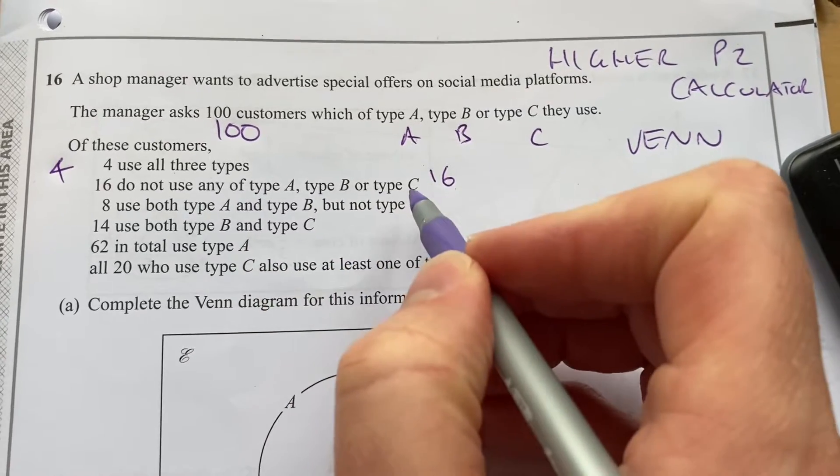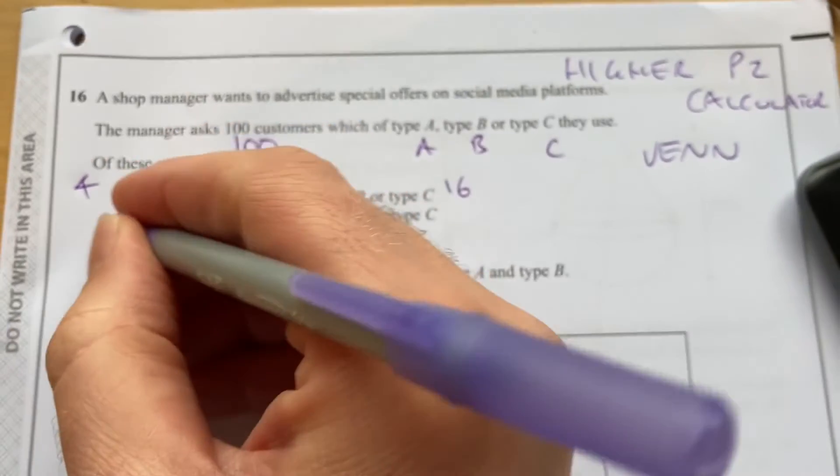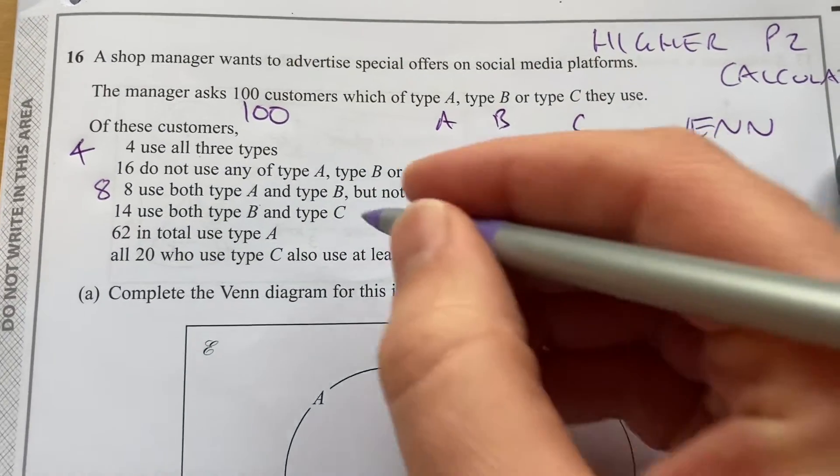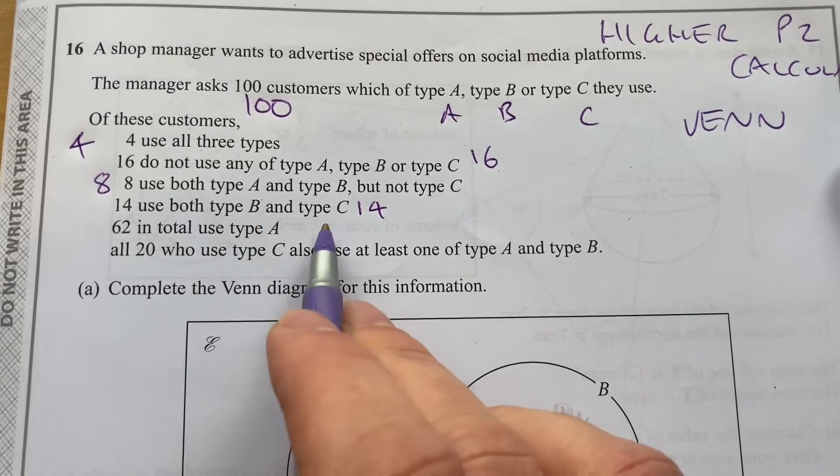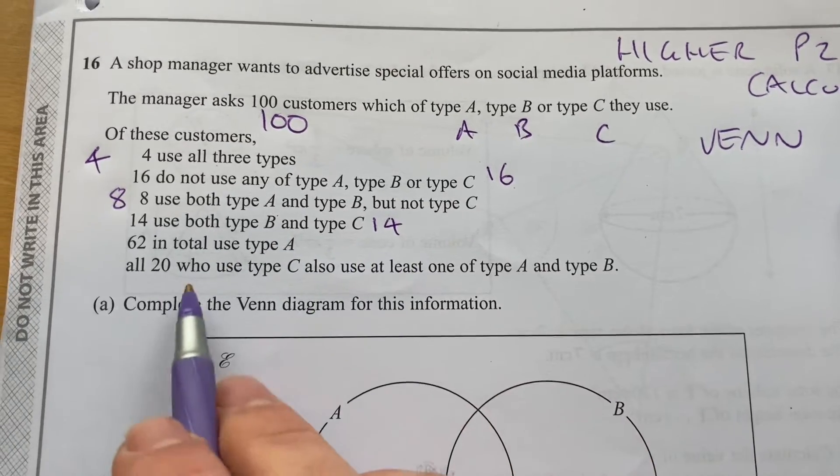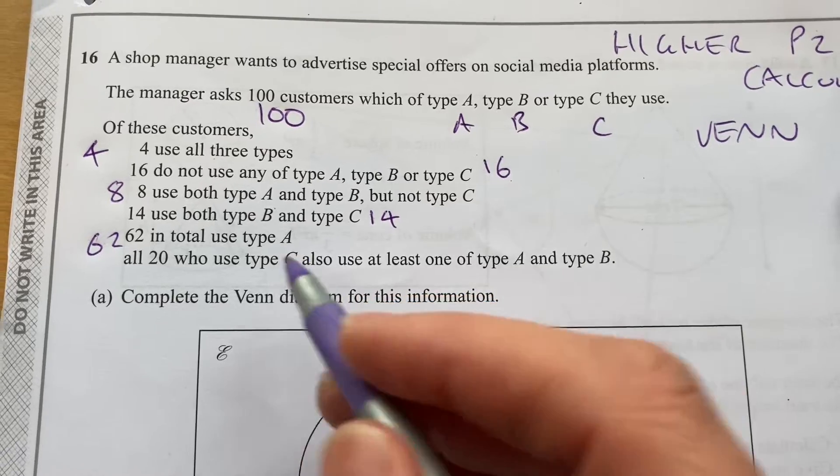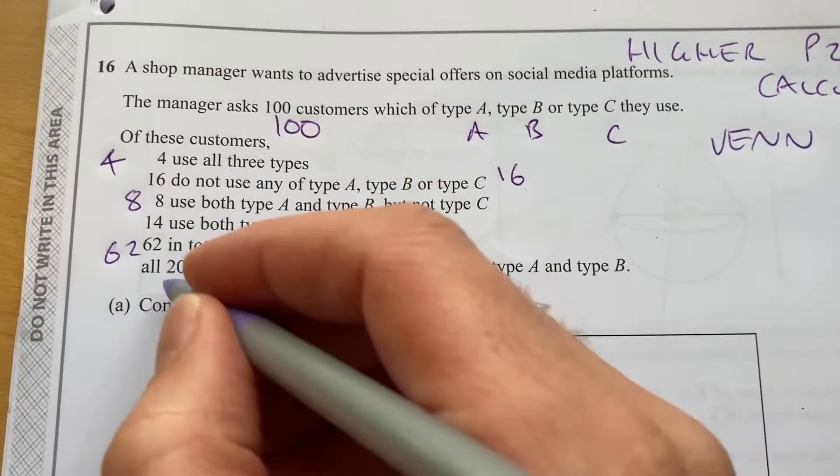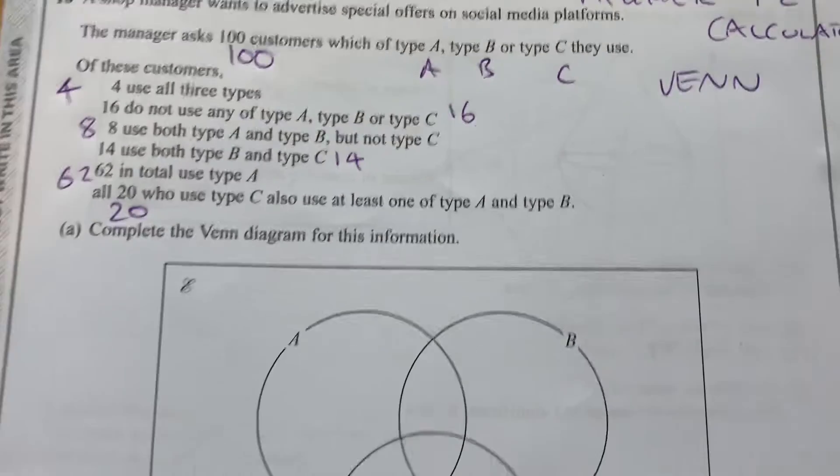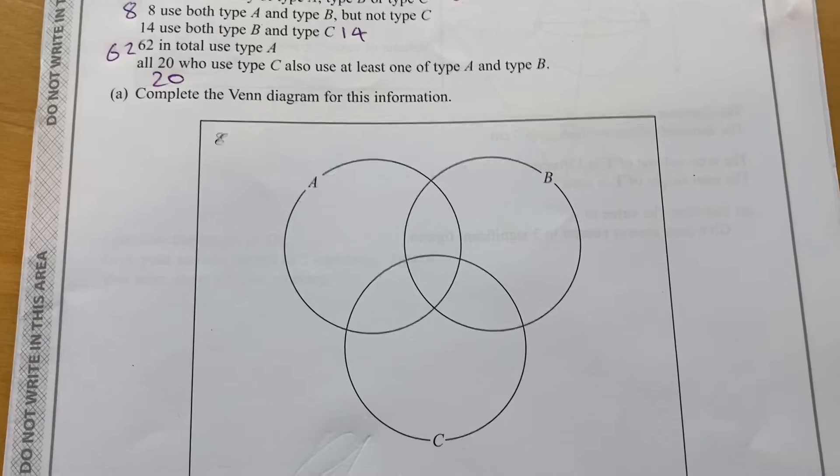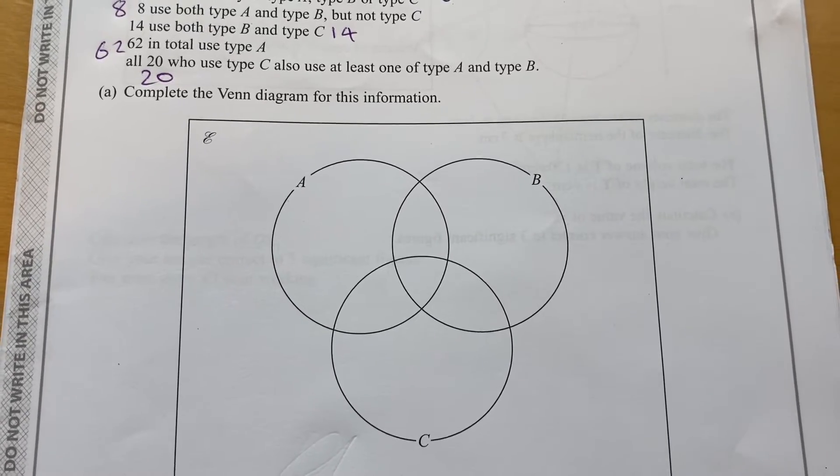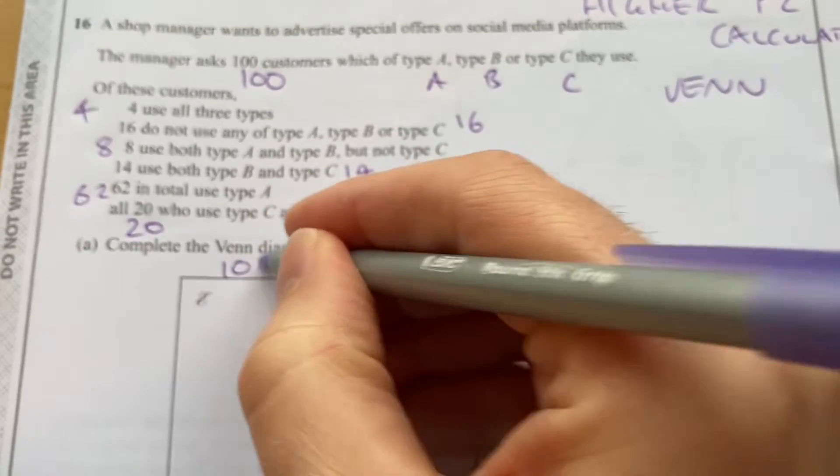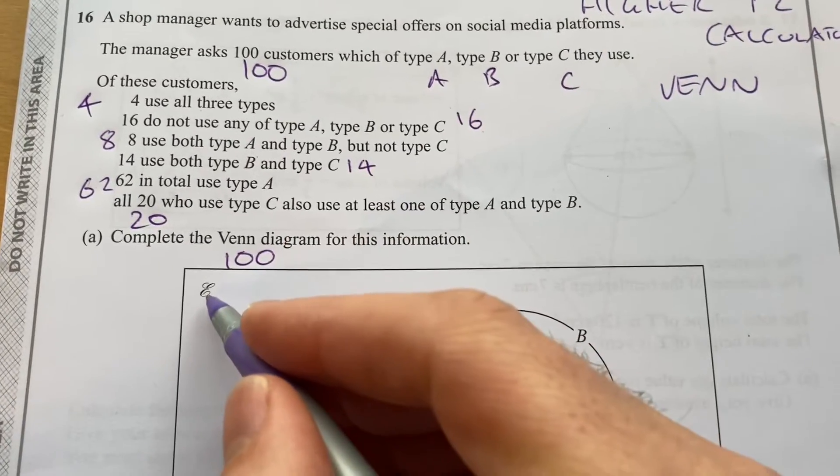16 do not use any of type A, B or C. 8 use both A and B but not C. 14 use both type B and type C. And 62 in total use type A. Now all 20 who use type C use at least one of A and B. And we have to use that information to complete this Venn diagram. I love Venn diagrams, they're a great way of representing information. The universal set is 100.